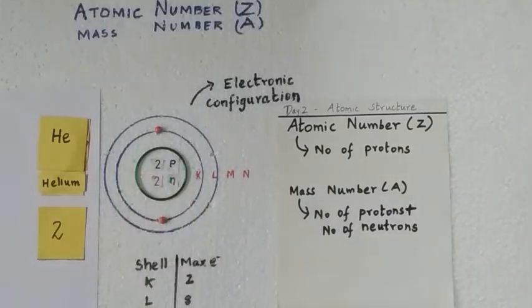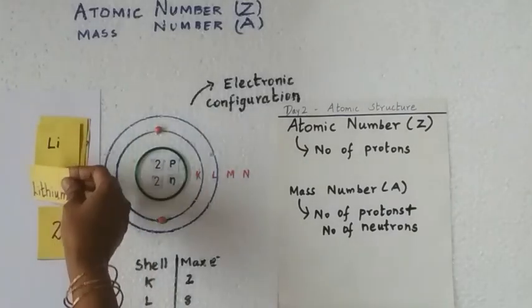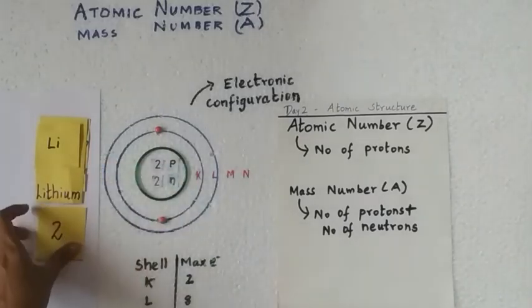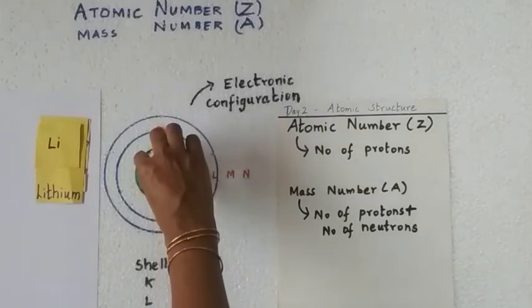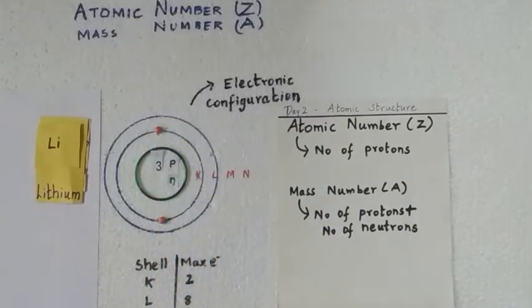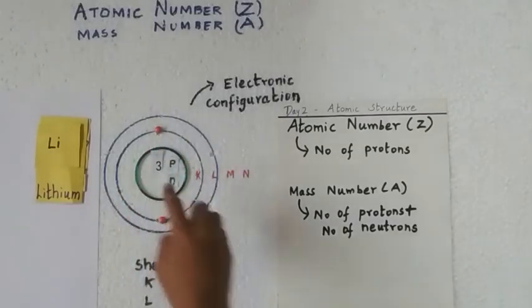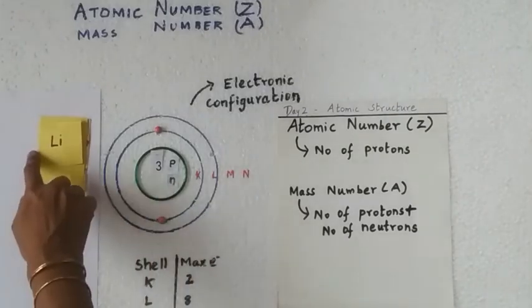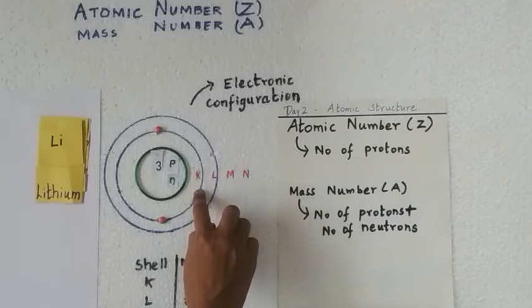Let us consider the next example: lithium, with the symbol Li. It is used in batteries. Lithium has 3 protons, so the atomic number is 3. Since it has 3 protons it must also have 3 electrons, but we currently only have 2. I need to add one more electron; however, I cannot add it to the same shell because the maximum capacity of the K shell is 2 electrons.